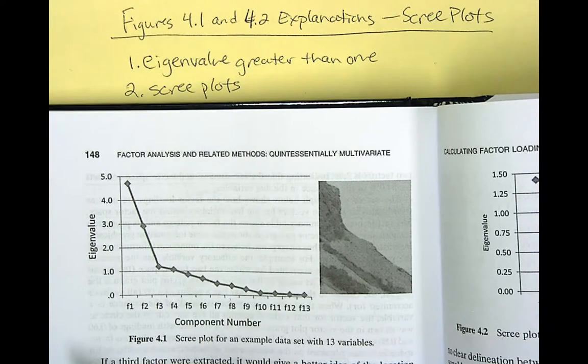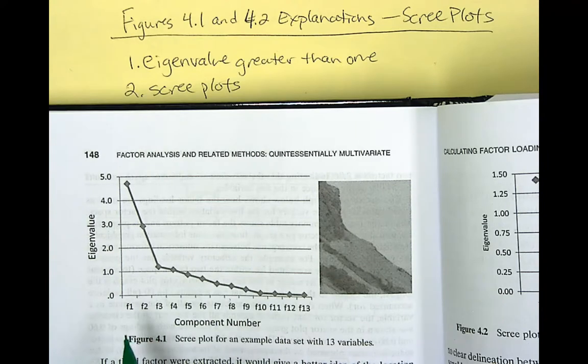However, by using the scree plot criterion, only three of these would be retained. So we would have factor one, two, and three. And it kind of seems more reasonable, and I'll explain why.